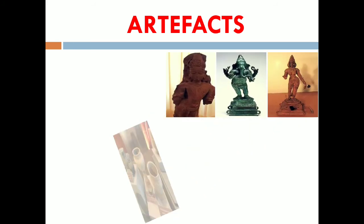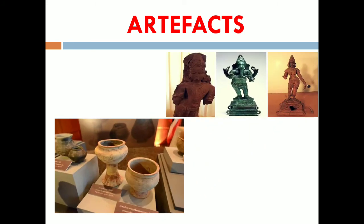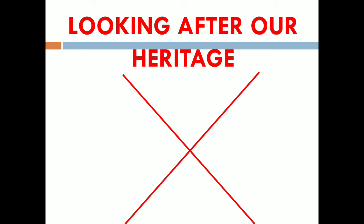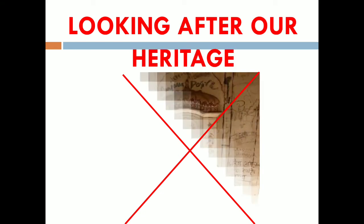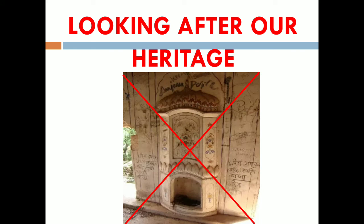The artifacts indicate that the people of the Indus Valley traded with different countries through land and sea. They sent out cotton, timber, ivory, gold, and beads of precious stones. In exchange, they received silver, tin, and wool.